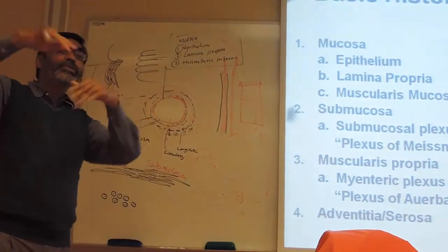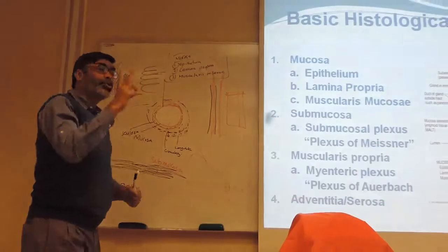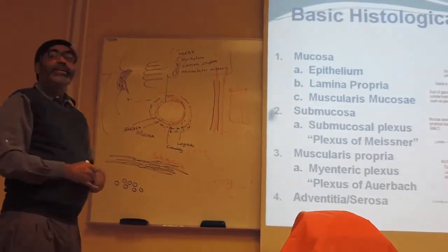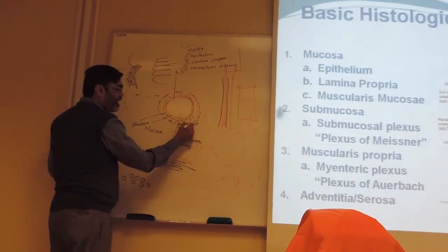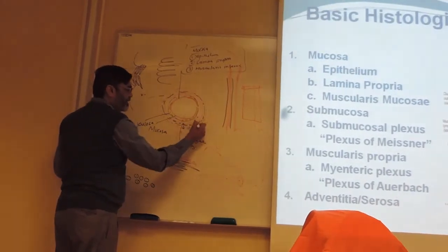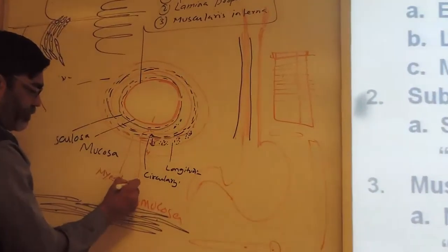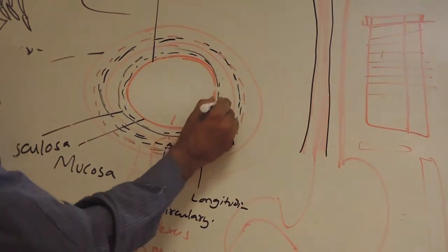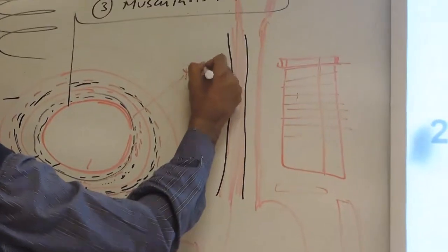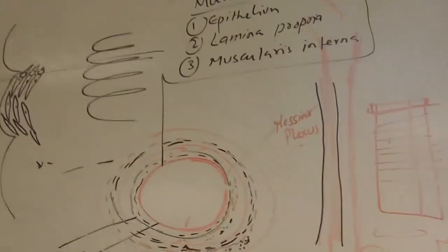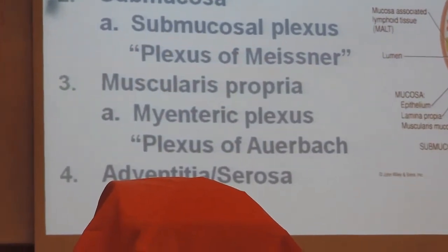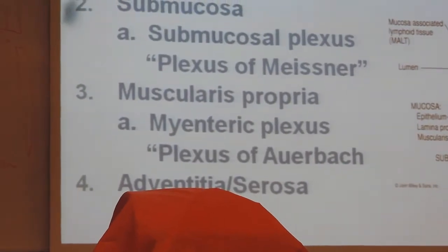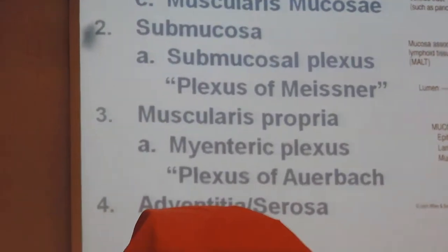The movement of the muscle needs innervation — nerve supply. There are two nerve plexuses in the GIT. One plexus is present between the circular and longitudinal muscle layers; this is called the myenteric plexus. Another plexus is in the submucosa; this is called Meissner's plexus. The myenteric plexus is located within the musculosa, between the circular and longitudinal muscles. Meissner's plexus is in the submucosa layer.